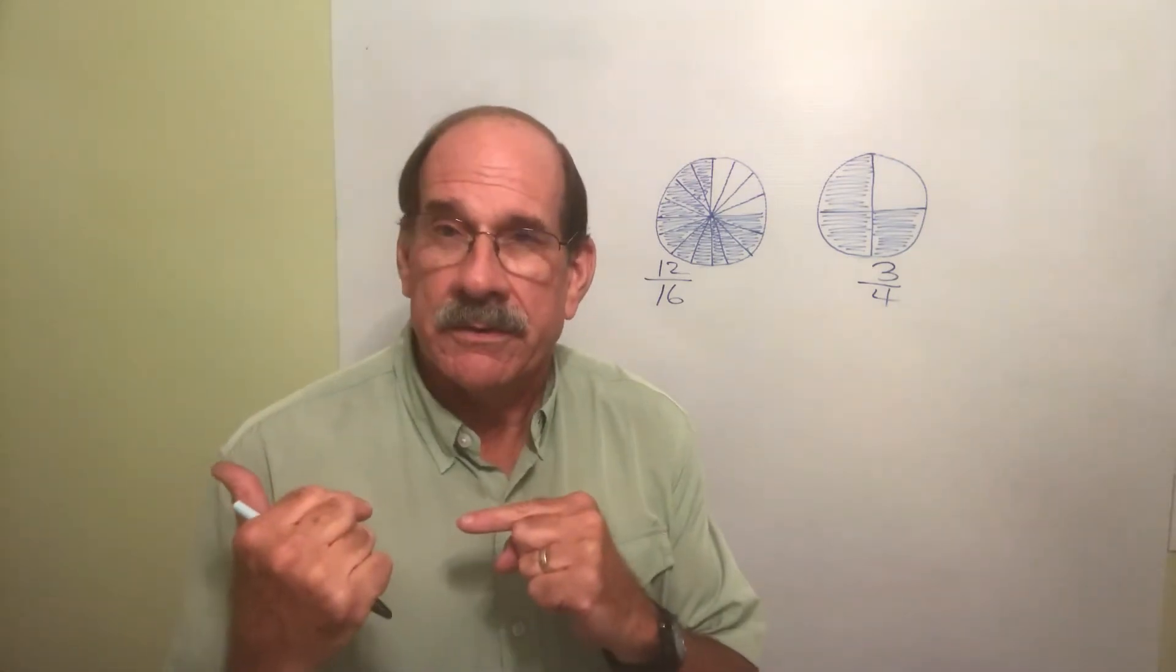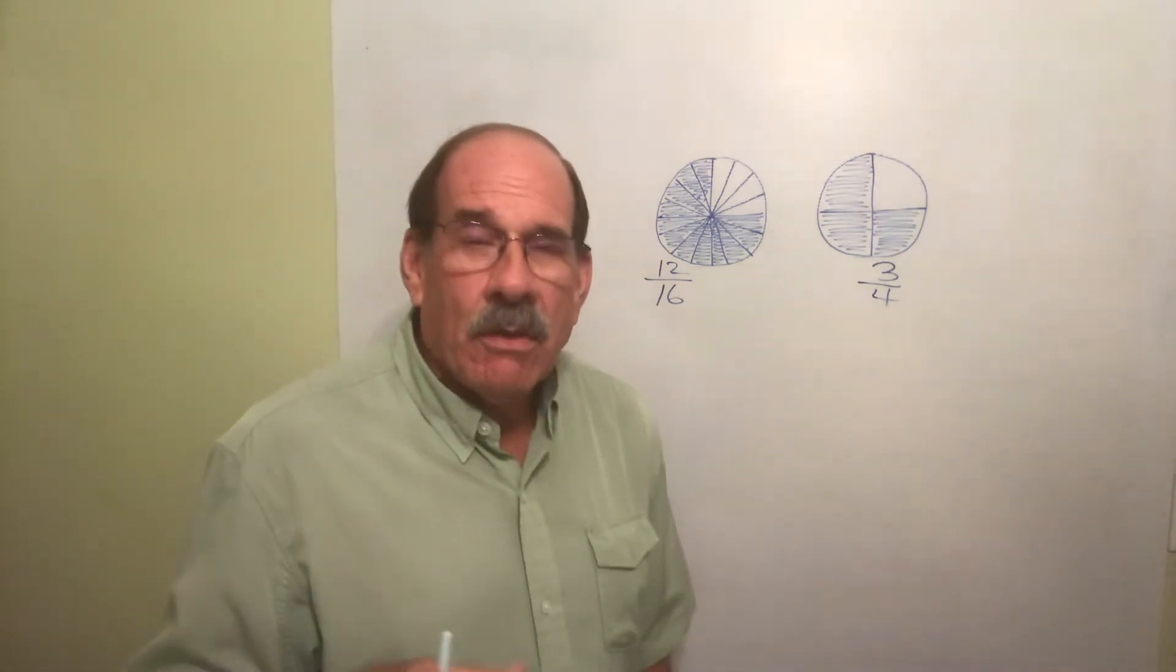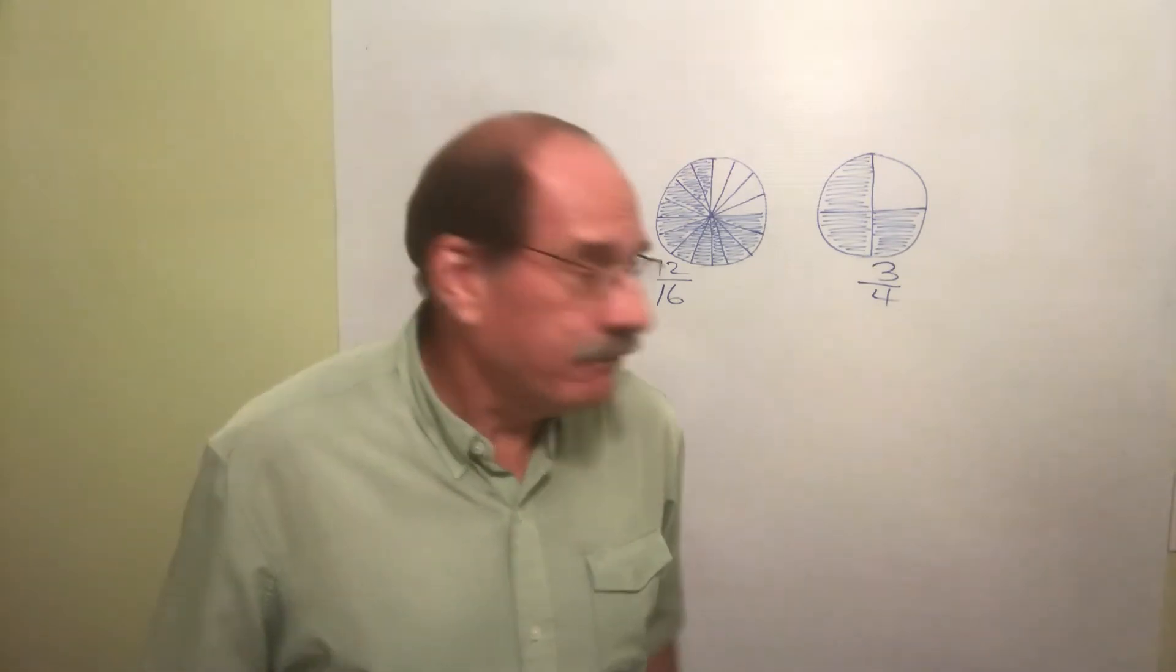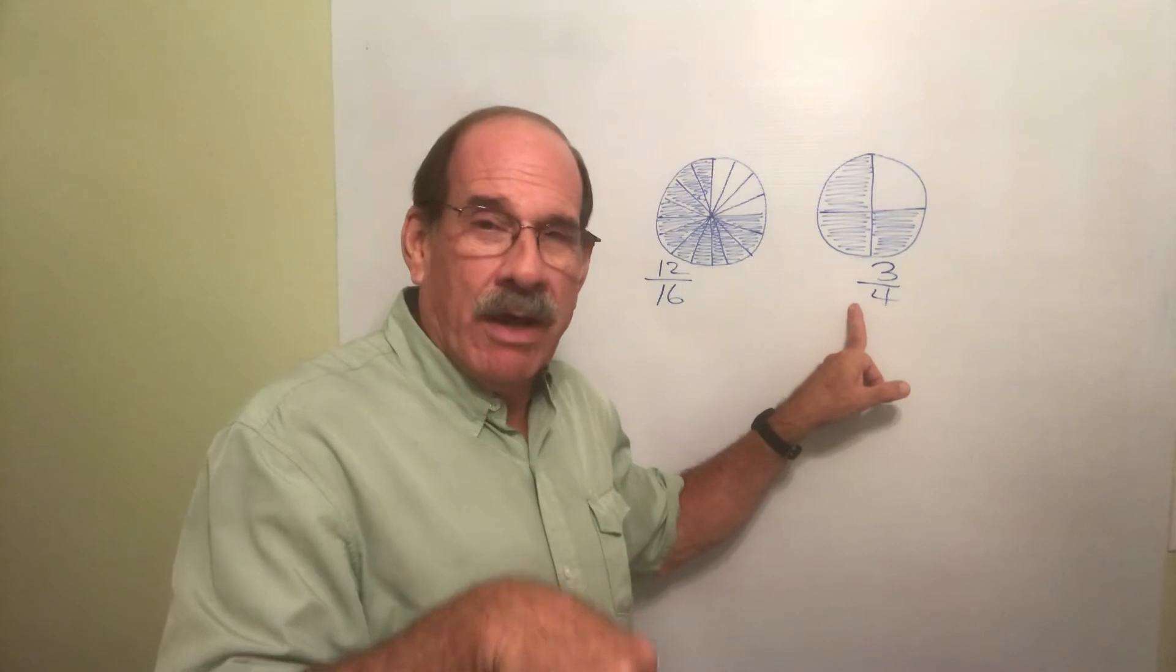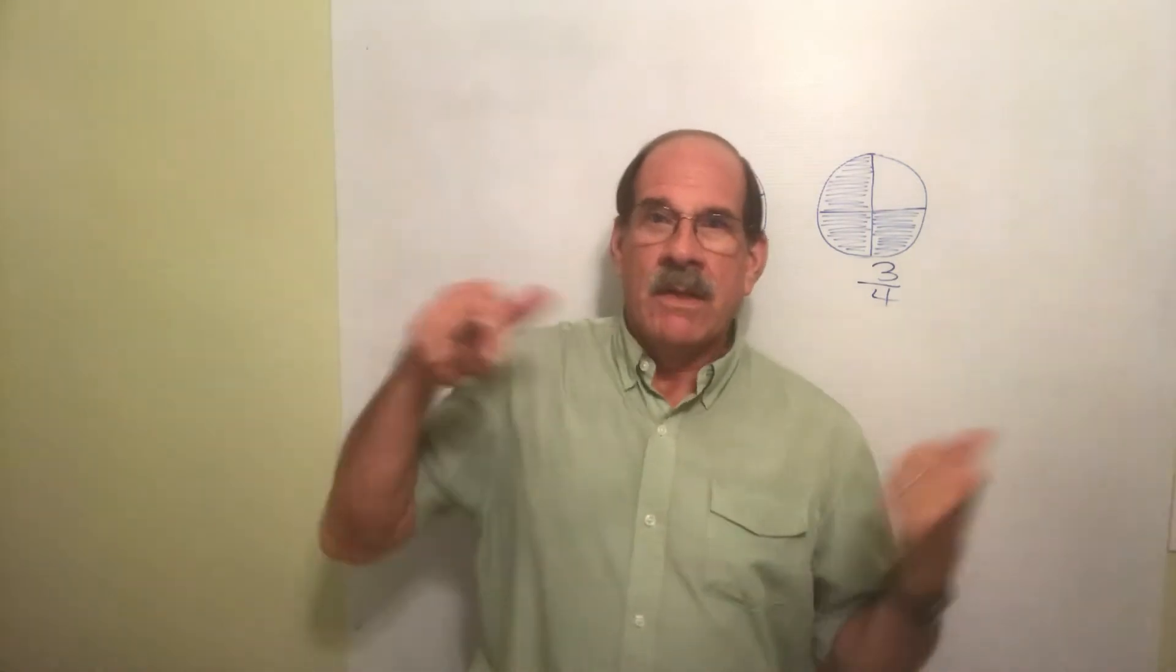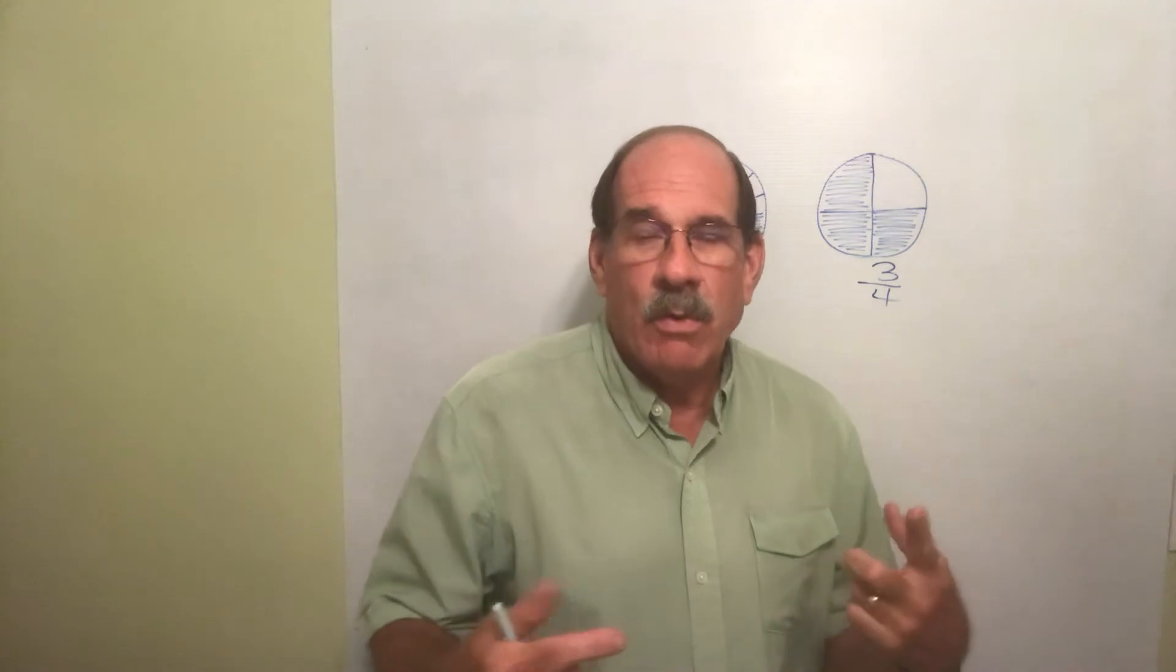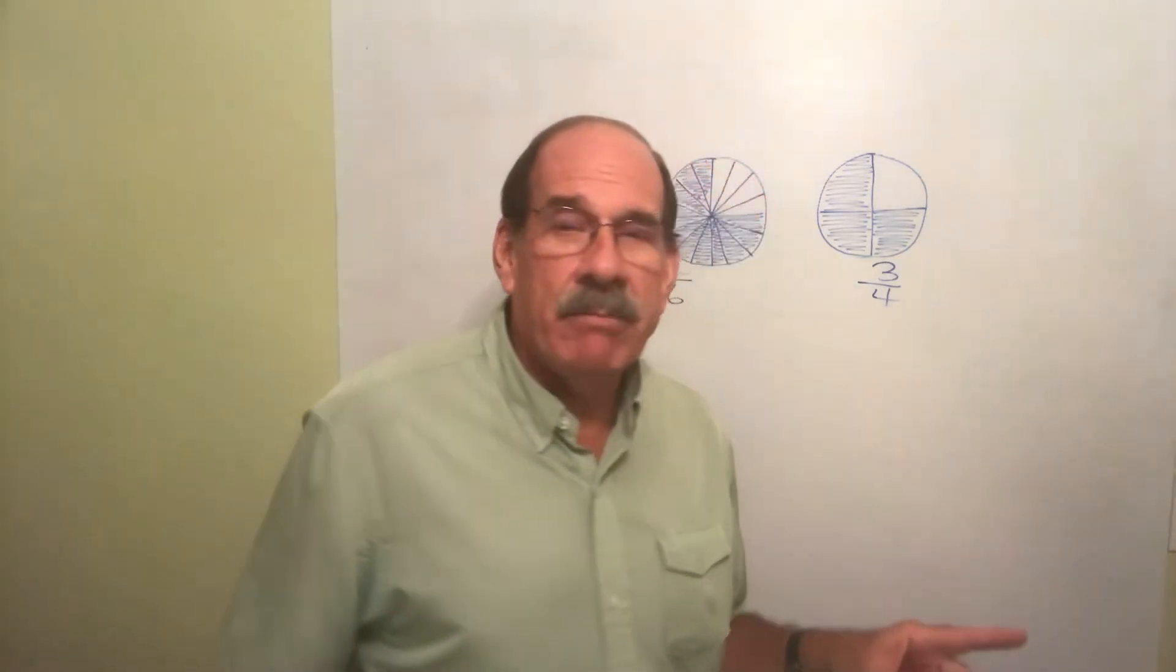So when you enlarge a fraction, there's always some goal in mind. Well, let's give you some goal in mind. I'm going to enlarge this so that the denominator, the bottom number, is the number sixteen. So if I'm enlarging the fraction three-fourths to make the denominator sixteen, that means I'm doing the reverse of reducing. I multiply top and bottom by the same number.